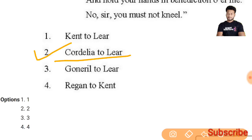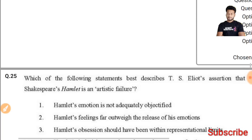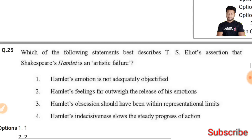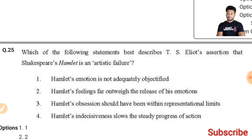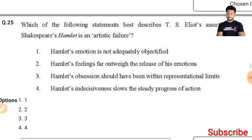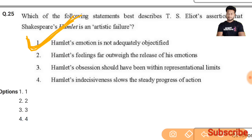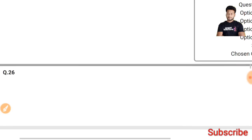Question 25: Which statement best describes T.S. Eliot's assertion that Shakespeare's 'Hamlet' is an artistic failure? When Eliot talks about the artistic failure of Shakespeare's 'Hamlet,' he said it was not adequately objectified — meaning it lacked an objective correlative. The first option is the right answer.